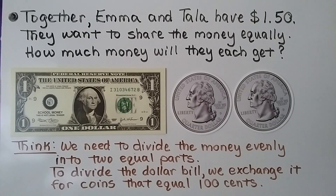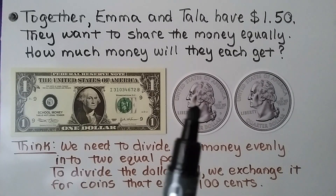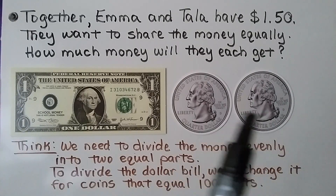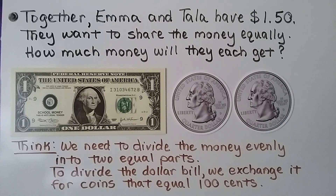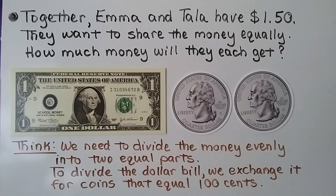Together, Emma and Tala have $1.50 and they want to share the money equally. How much will they each get? We have $1 and 2 quarters for the 50 cents. We think we need to divide the money evenly into two equal parts, one for Emma and one for Tala. To divide the dollar bill, we exchange it for coins that equal 100 cents.